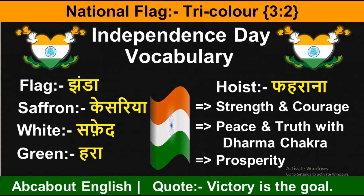Next word hai 'flag' — jo ki national flag hamara tiranga hota hai. English mein kahein to 'tricolor.' Flag ka matlab hota hai jhanda aur usse fehrane ke liye word hai 'hoist' — yaani fehrana. 'Unfurl' bhi keh sakte hain. Ismein hain — saffron yaani kesar, white yaani safed, aur green yaani hara. Beech mein ek chakra hota hai blue color ka jisme spokes hote hain — yaani teeliyan. Kesar rang strength and courage ka pratik hai, safed rang peace and truth ka, aur green color prosperity ko indicate karta hai yaani samriddhi ko.